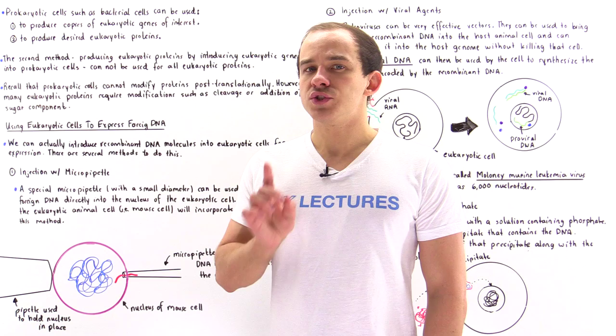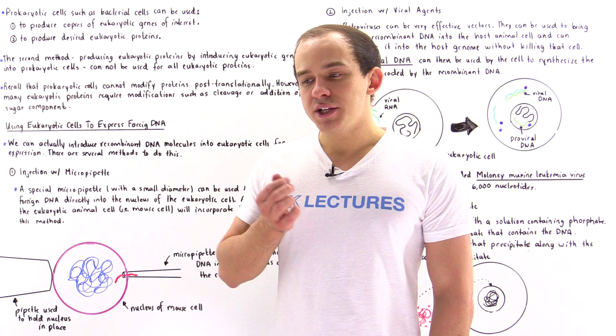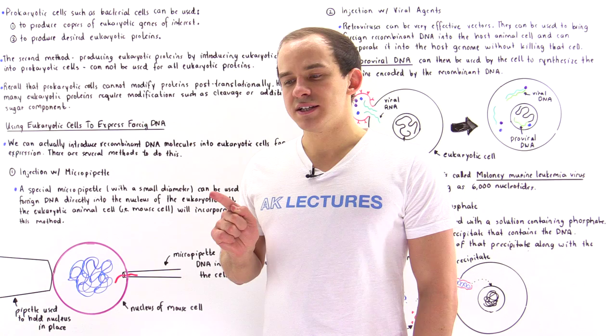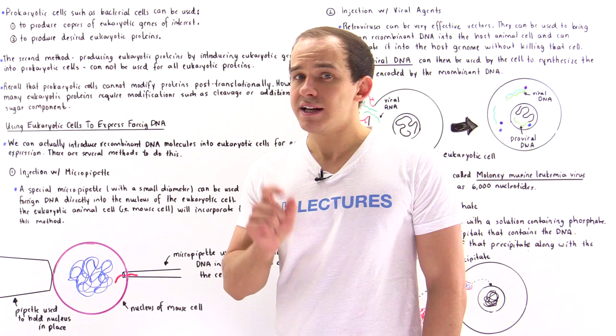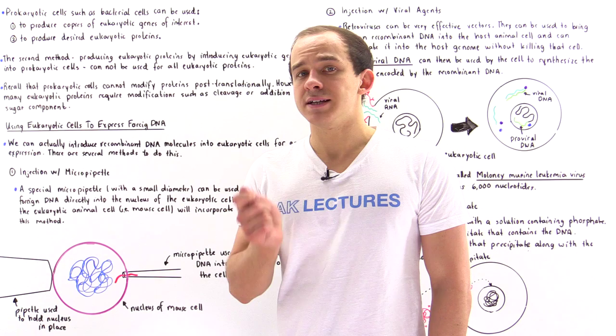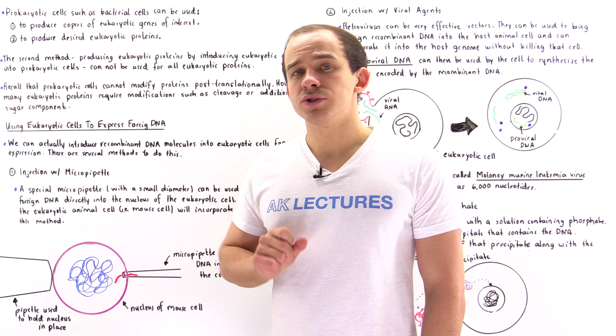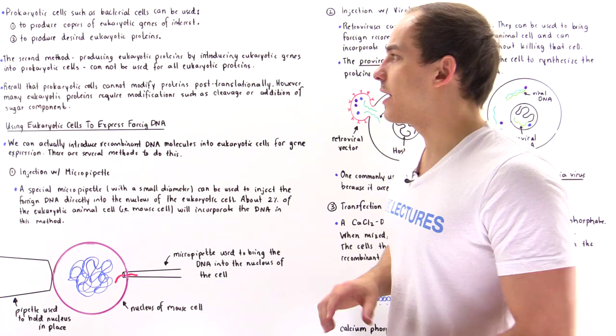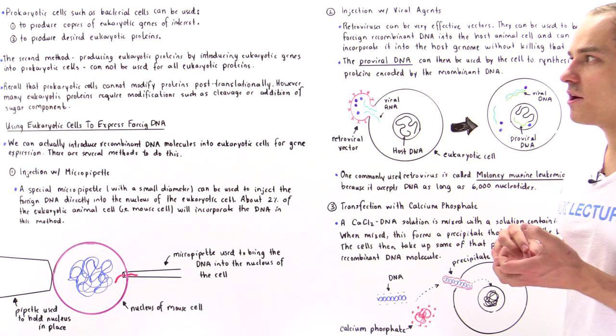So far in our discussion on recombinant DNA technology, we discussed two important applications of prokaryotic cells. We said that we can use bacterial cells to basically replicate gene molecules to make many copies of a single DNA molecule of interest. We also said that if we modify a eukaryotic gene by removing introns and splicing together exons, and introduce that gene into a bacterial cell, the bacterial cell can produce the protein encoded by that eukaryotic gene.